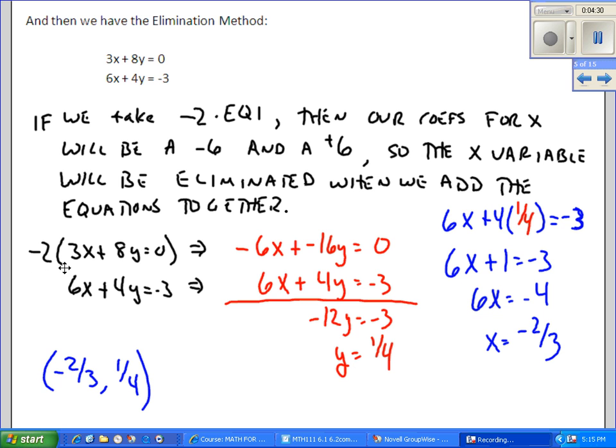So again, multiplying the first equation by negative 2 gives us a new equation. I didn't change the second equation. When we add them together, the x's are now gone. We can solve for y. And then we can substitute that value for y back into either of the two original equations and solve for the x to get our solution.